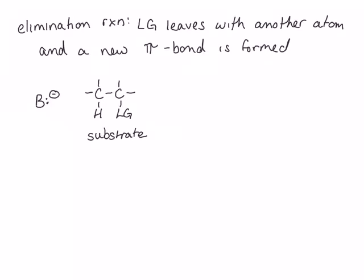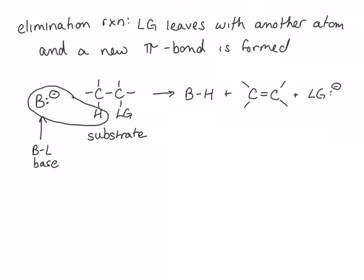The base deprotonates the carbon next to the carbon with the leaving group, giving us the conjugate acid of the base, a new pi bond between those two carbons, and the leaving group with its bonding electrons. The Bronsted-Lowry base is deprotonating the substrate. The bonding electrons from that proton are used to form the new pi bond, and the leaving group leaves with its bonding electrons to form the given products.